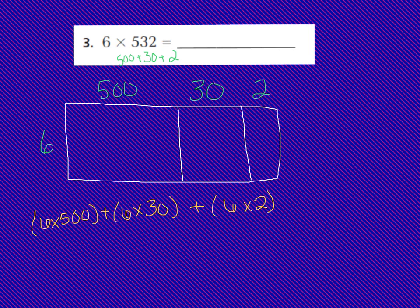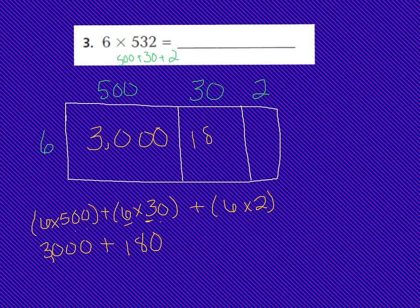As you can see, I have our multiplication problems here and now I can find the partial products. I can do 6 times 500: 6 times 5 is 30, plus my 2 zeros for placeholders, which gives me 3,000. 3,000 goes inside the box for 6 times 500 — that's my first partial product. Now I'm going to multiply 6 times 3, which is 18, plus the zero in the ones place, which gives me 180. That goes into the box for 6 times 30. And now I can do 6 times 2, which is 12, and that goes into the box for 6 times 2.